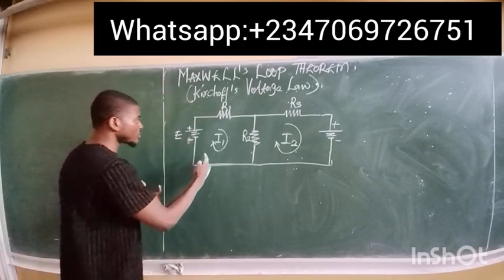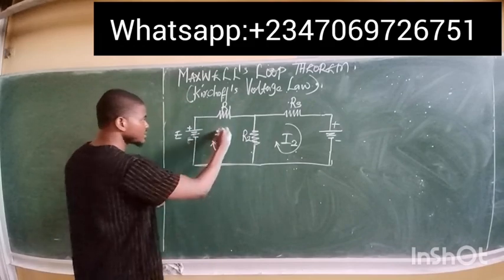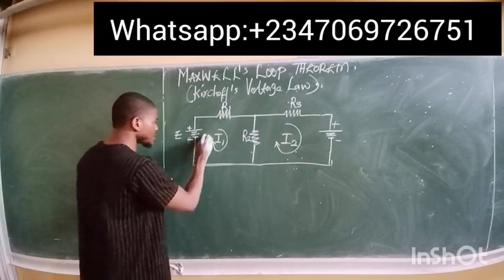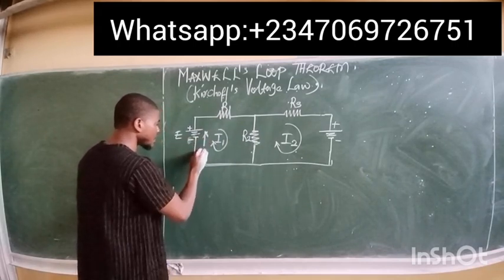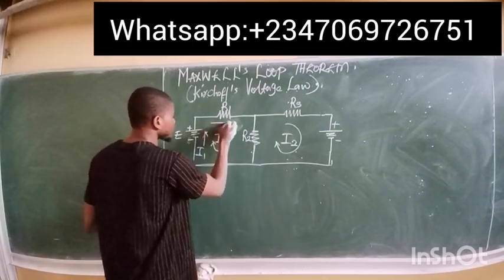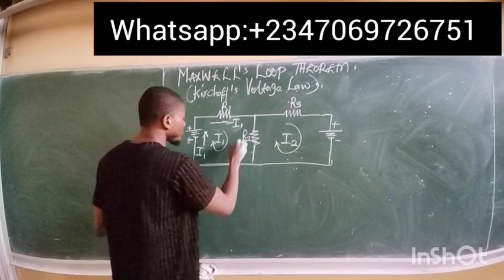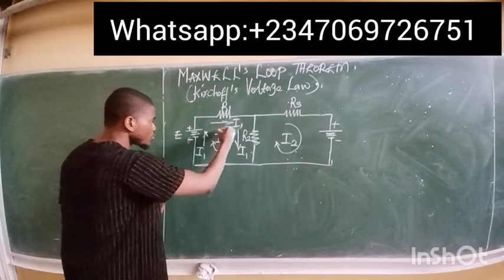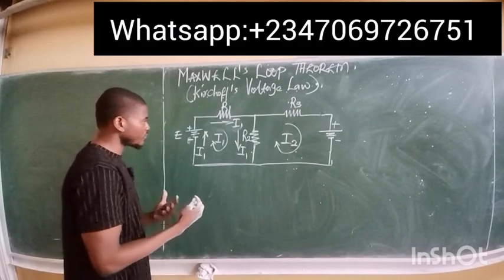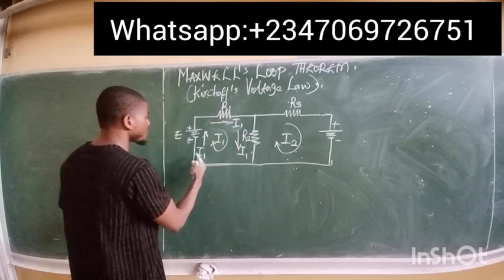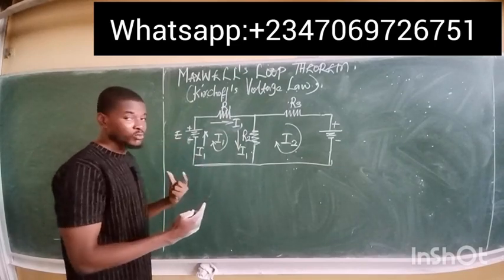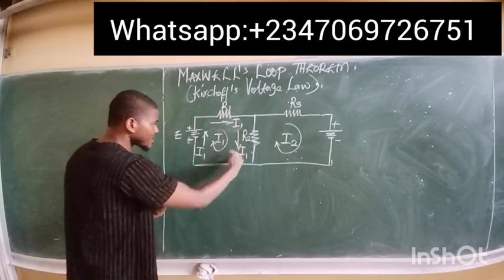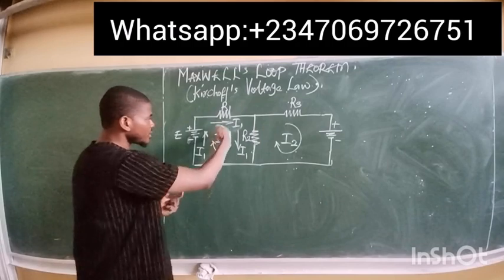For the first loop, we have current i1 flowing in a particular direction through this loop. This current i1 flows through this resistor, the same current i1 flows through this other resistor, so i1 flows through the potential source which powers the circuit, and also flows through r1 in this manner — that is the direction of the first loop.